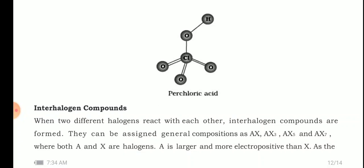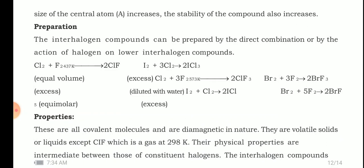As the size of the central atom A increases, the stability of the compound also increases. Interhalogen compounds can be prepared by direct combination or by the action of a halogen on lower interhalogen compounds. For example: chlorine reacts with fluorine to form ClF; iodine reacts with chlorine to form ICl₃; chlorine reacts with fluorine to form ClF₃; bromine reacts with fluorine to form BrF₃ or BrF.